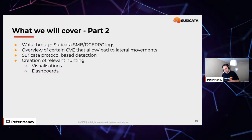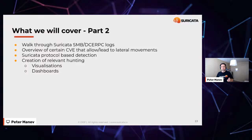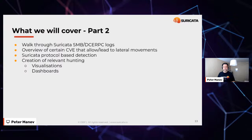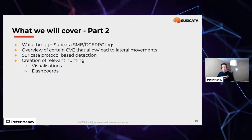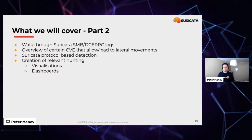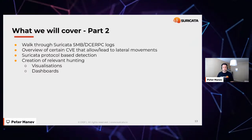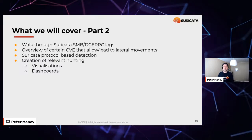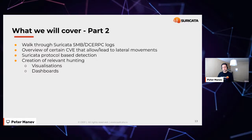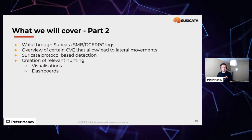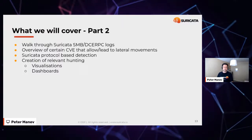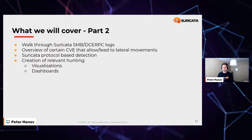Part one will cover the impact of patching availability, an overview of a few simple use cases, what Suricata can log and detect and alert on, some open source software tools that can be bundled to visualize the data, and example logs. Part two will walk through Suricata logs more thoroughly — SMB and DC-RPC logs — and tackle CVEs that allowed for lateral movement, reviewing protocol-based detection and creating visualizations in a dashboard for detecting lateral movement.